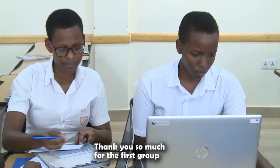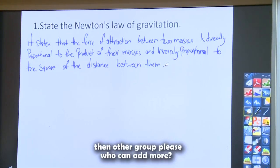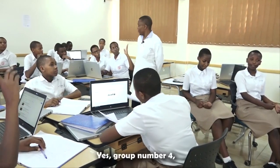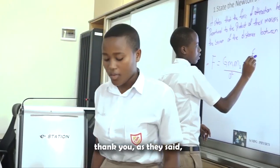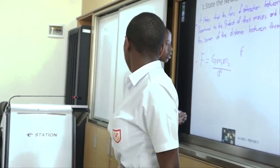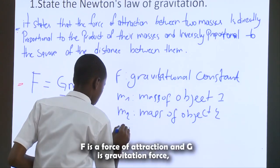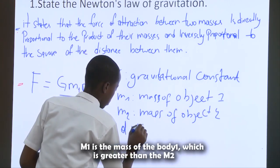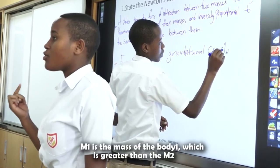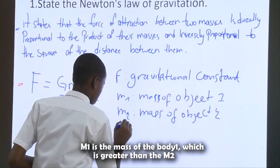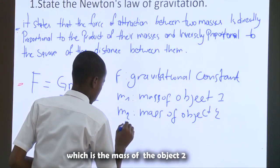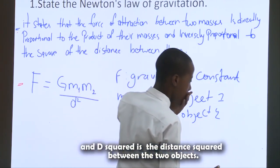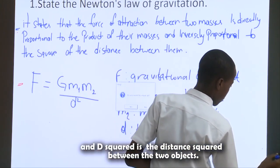Thank you so much to the first group. Group number four, who can add more? F is the force of attraction, G is the gravitational constant, M1 is the mass of body one which is greater than M2, which is the mass of the second object, and D squared is the distance squared between the two objects.